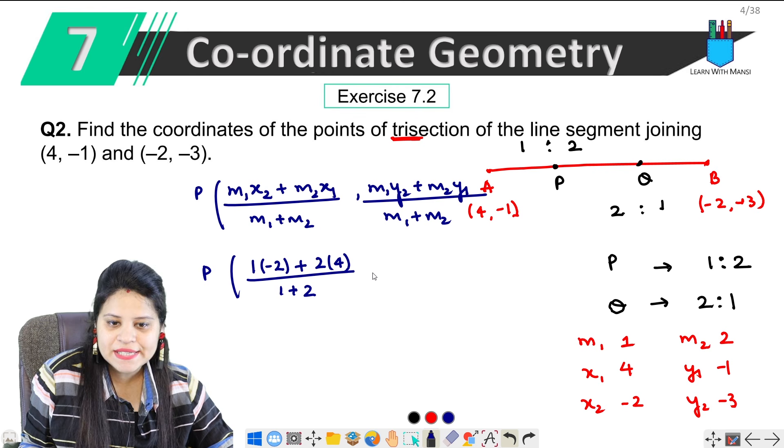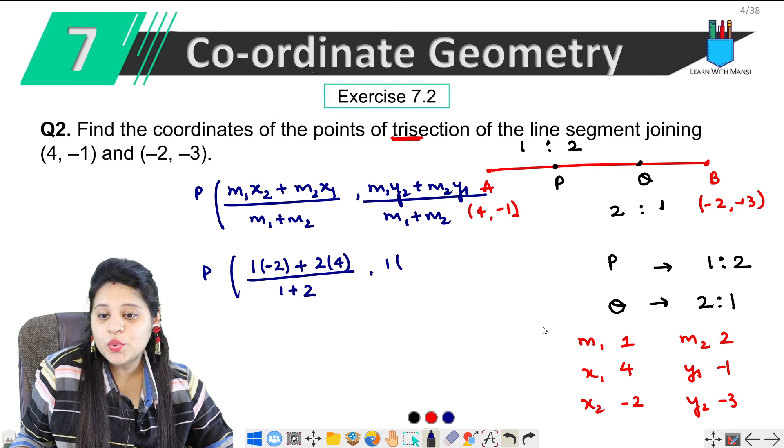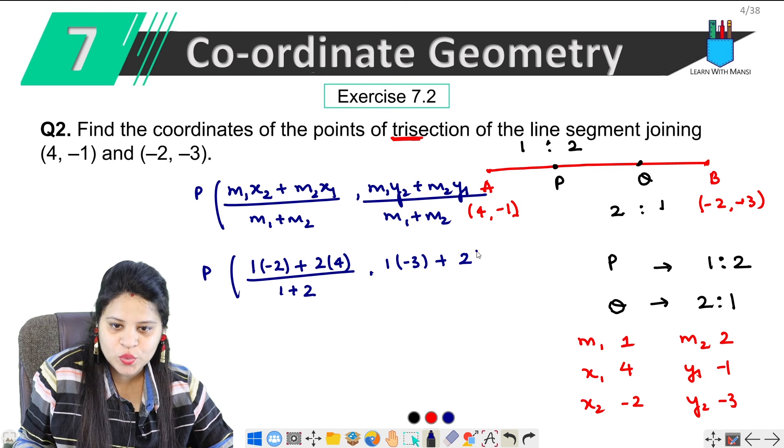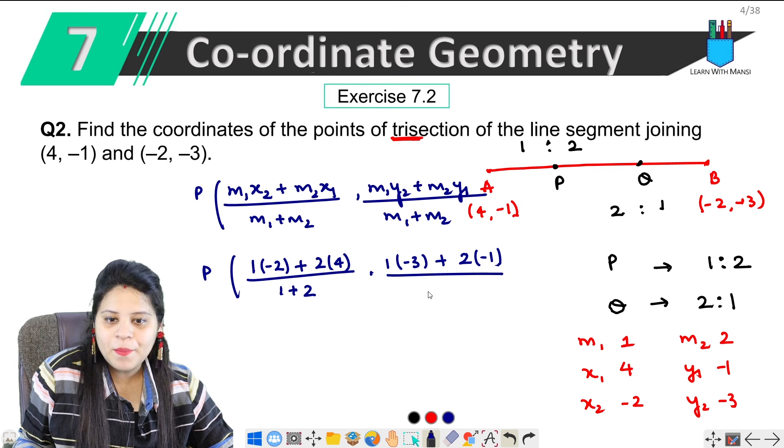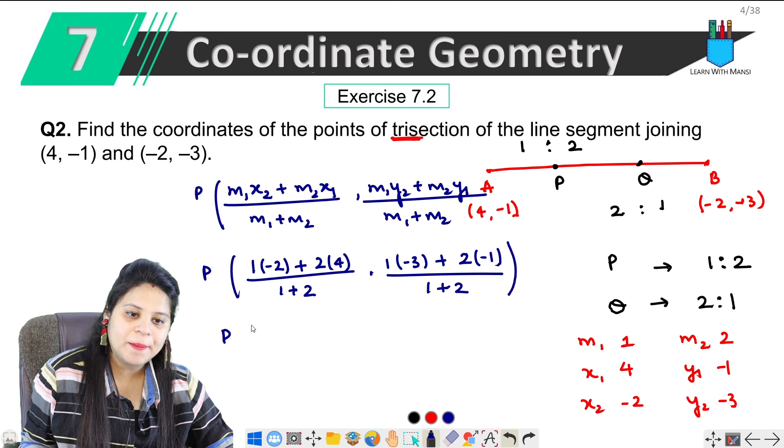Okay, next y coordinates. m1, 1, y2, -3, plus m2 we have 2, y1, -1, upon 1 + 2. Okay, so this is P.